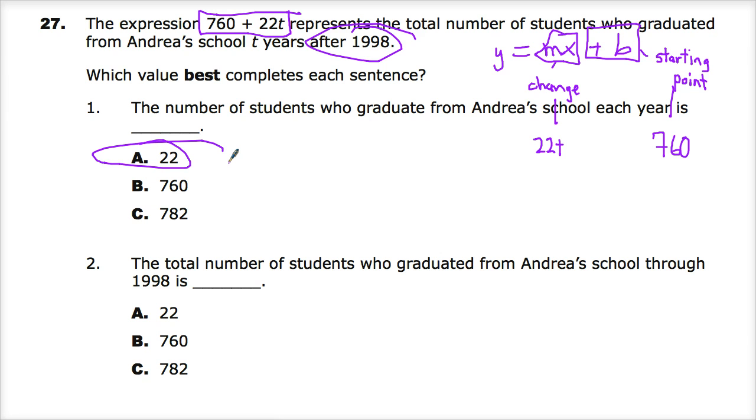So, the part that adjusts the original number repeatedly, the amount that that happens, that's your M, that's 22 in this problem.